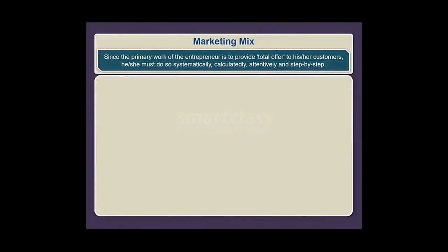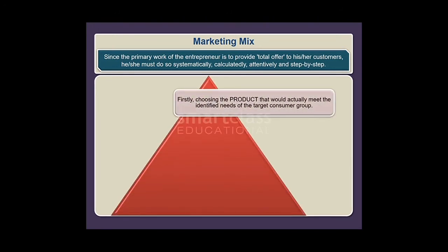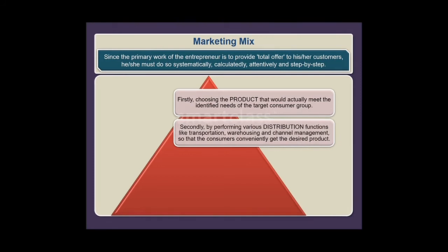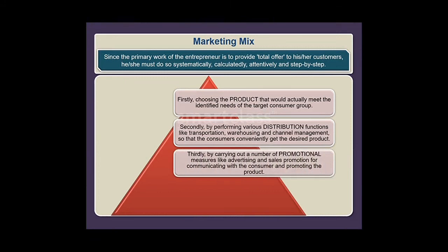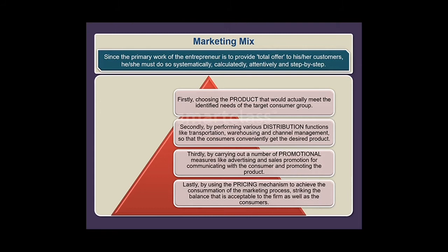Since the primary work of the entrepreneur is to provide a total offer to customers, he or she must do so systematically, calculatedly, attentively, and step-by-step. Firstly, by choosing the product that would actually meet the identified needs of the target consumer group. Secondly, by performing various distribution functions like transportation, warehousing, and channel management so that consumers conveniently get the desired product. Thirdly, by carrying out promotional measures like advertising and sales promotion for communicating with consumers. Lastly, by using the pricing mechanism to achieve the consummation of the marketing process, striking a balance acceptable to both the firm and the consumers.